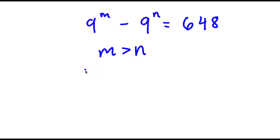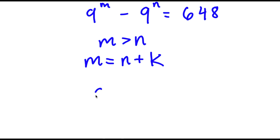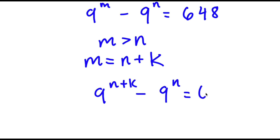Now that we know this, we can say that m is equal to n plus some number k. I'm going to replace m with n plus k. So now I have 9 to the power of n plus k minus 9 to the power of n is equal to 648.